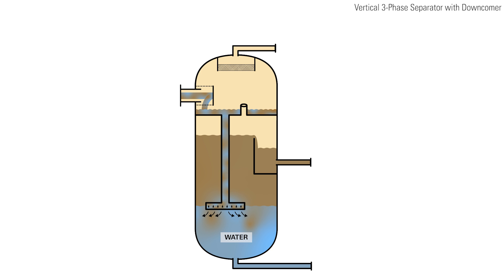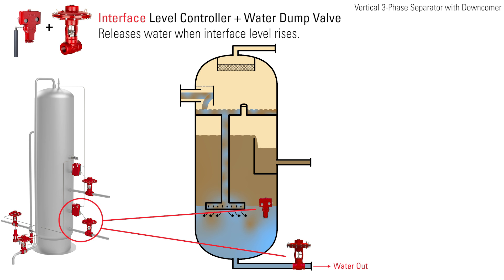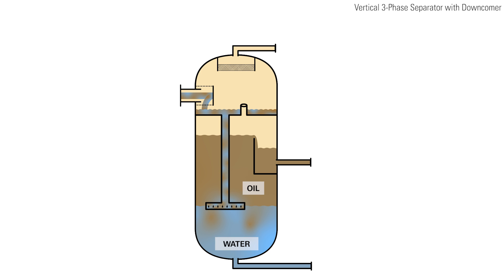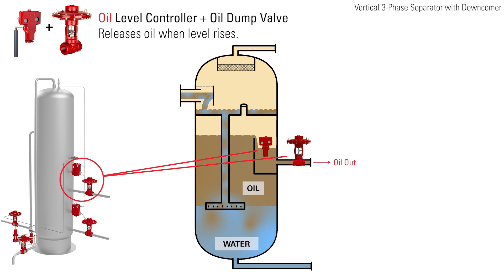Water, being heavier than oil, will separate and settle to the bottom of the vessel. The interface level controller will open the water dump valve when the interface level rises. The lighter oil will separate out and rest on top of the water, with the oil level in the vessel determined by the weir height. Oil flows over the weir and into the oil bucket, and this oil level in the bucket is controlled by a level controller, which opens the oil dump valve when the level increases.